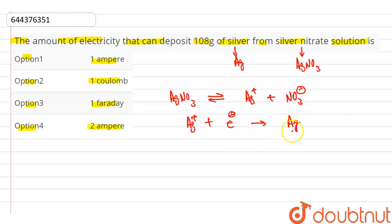So here clearly when 1 mol of silver is formed, then 1 mol of electron is required. Therefore 1 faraday charge is required, and 1 mol of silver means 108 gram of silver.